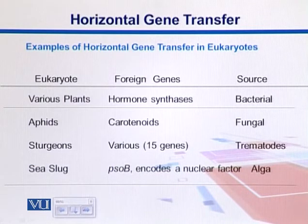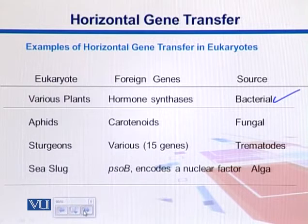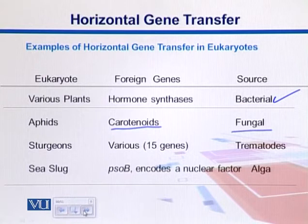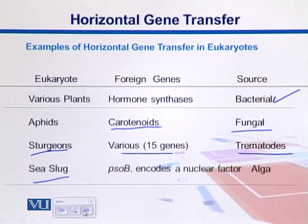Here is another example of horizontal gene transfer in eukaryotes. Different plants have a hormone synthase gene that is suspected to be coming from bacteria. Aphids and insects have carotenoids whose origin may be fungal. Sturgeons have about 15 genes coming from trematodes. Sea slugs have PSOB, which encodes a nuclear factor, with the source being some alga.